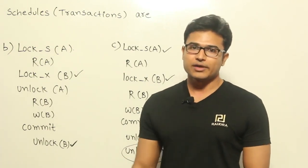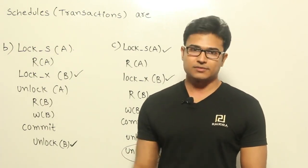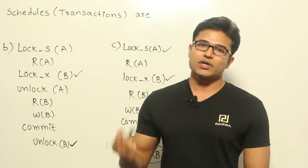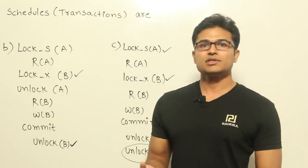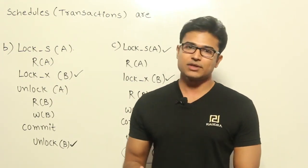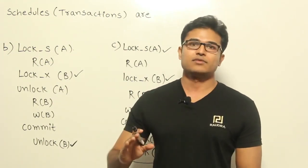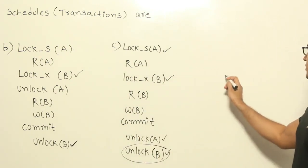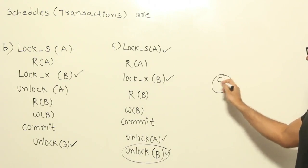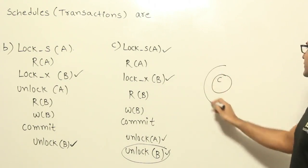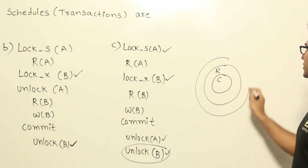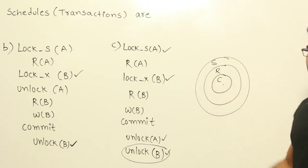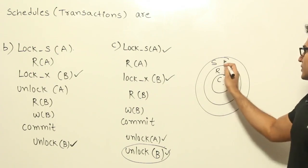If you think about it, every rigorous is strict — because in rigorous you are going to release the exclusive locks only after commit, which is the same thing strict requires. And every conservative is rigorous as well. So the hierarchy is: every conservative is rigorous, and every rigorous is strict.